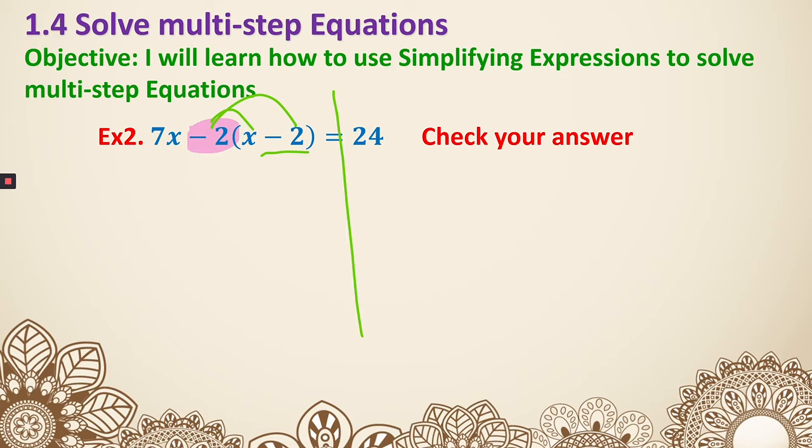So line down the equal sign, we will get 7x minus 2x. Negative 2 times negative 2 is a positive 4 equals 24. Then I do have like terms that I can combine. These two become 5x plus 4 equals 24.